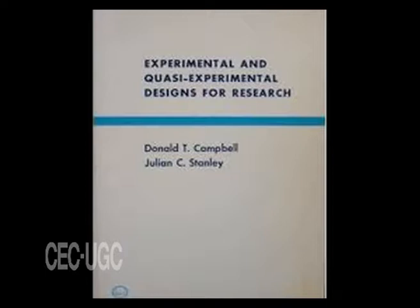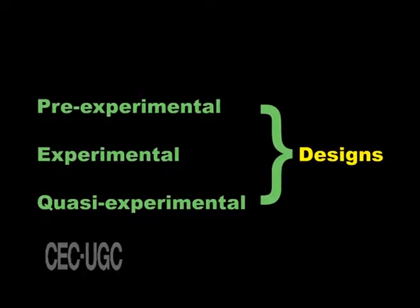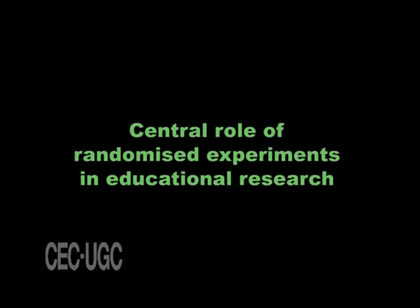In practice, the accumulation of evidence for or against any particular theory involves planned research designs for the collection of empirical data, and academic rigour plays a large part in judging the merits of research design. Several typographies for such designs have been suggested, one of the most popular of which comes from Campbell and Stanley. They are instrumental in popularizing the widely cited distinction among pre-experimental, experimental, and quasi-experimental designs and are staunch advocates of the central role of randomized experiments in educational research.